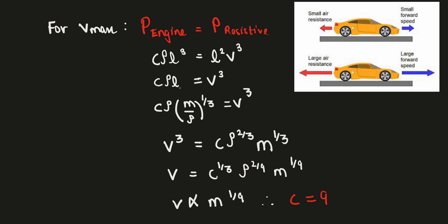Since I want the proportionality in terms of mass, I will write l as (m/ρ)^(1/3), as m was ρl³. So taking ρ down and taking cube root, I get l as this. So v³ comes out to be c·ρ^(2/3)·m^(1/3). And again, taking cube root, v comes out directly proportional to m^(1/9).